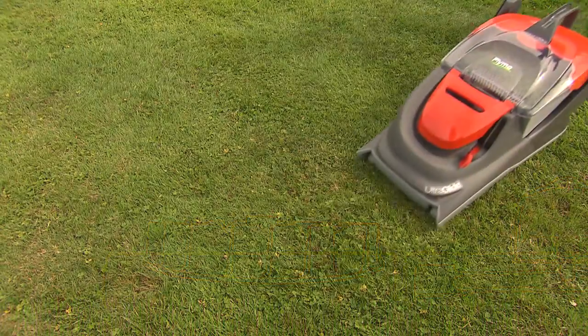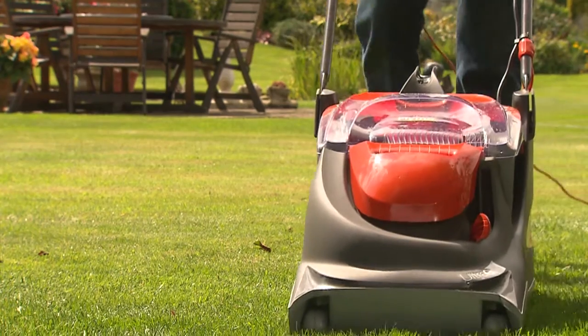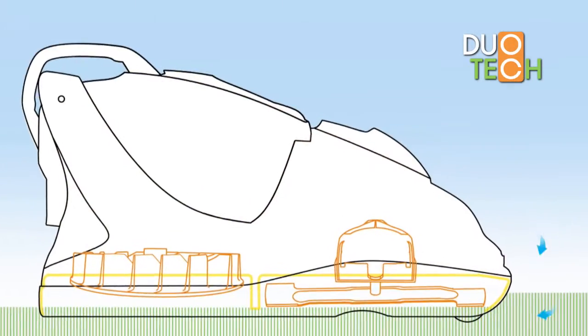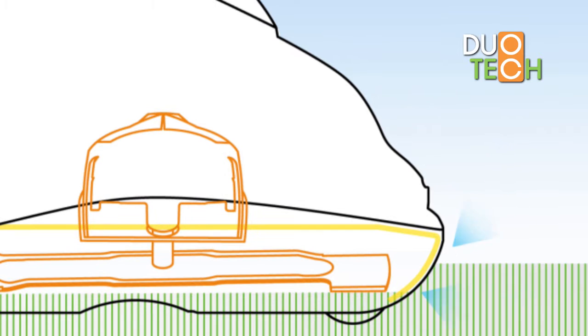This separation is key to the Duotech system and how the UltraGlide is able to outperform previous Hover Mowers. Taking air in at the front of the UltraGlide, the suction pulls the grass directly from the tip of the blade.